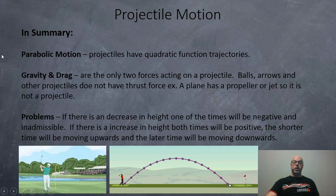So in summary, projectiles have parabolic motion or quadratic function trajectories, like this golf ball down below. Gravity and drag are the only two forces acting on a projectile, but we ignore drag in high school because it's just too complicated. Balls, arrows, and other projectiles do not have a thrust force. A plane has a propeller or a jet, so it is not a projectile. Problems: If there's a decrease in the height, one of the times will be negative or going back in time. We know that is inadmissible. If there's an increase in height, then both times will be positive. One will be the shorter time, the early time. The longer time will be the later time. So you have to decide, are you on the way up or on the way down? Trying to score in basketball is definitely coming down at a later time. I hope this helped. Thank you.